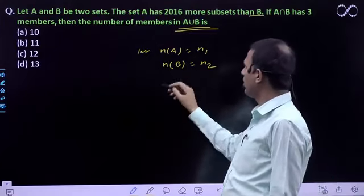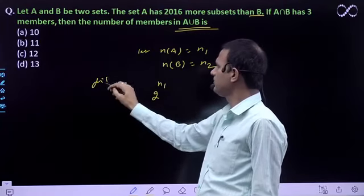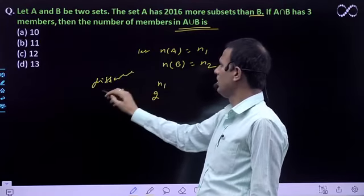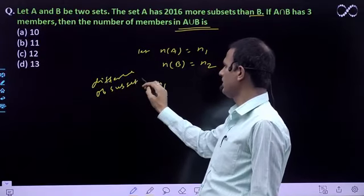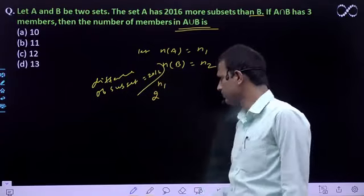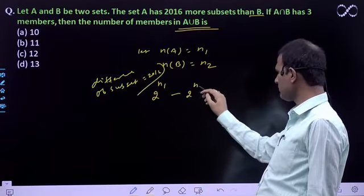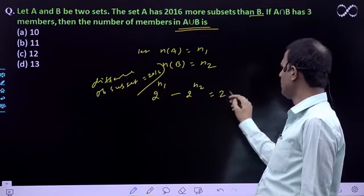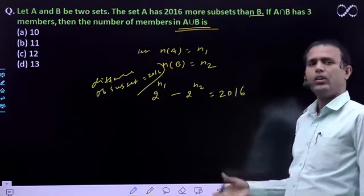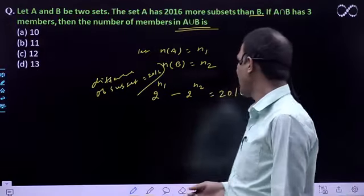This means the difference of total number of subsets equals 2016. So the difference of number of subsets equals 2016, which means 2 to the power n1 minus 2 to the power n2 equals 2016.